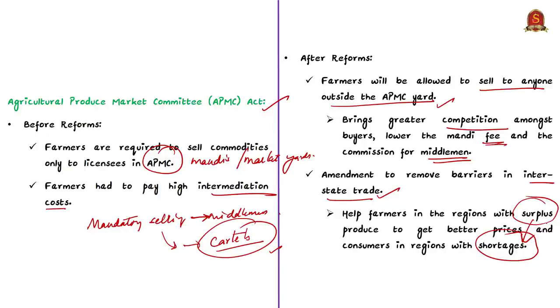So this is all what is discussed in the news article. Today we have discussed about NABARD, Rural Infrastructure Development Fund, Farmer Producer Organizations and reforms proposed under Atmanirbhar Bharat Abhiyan.